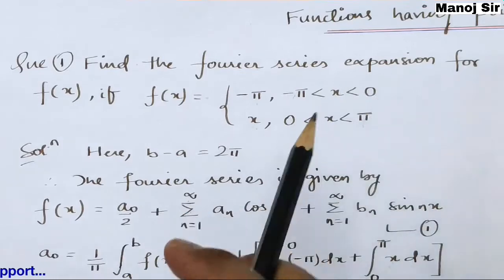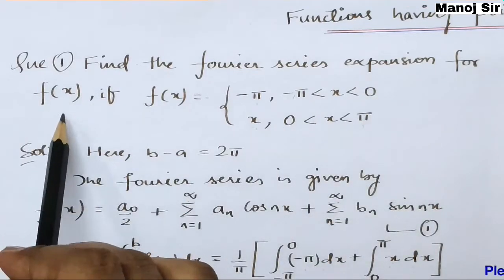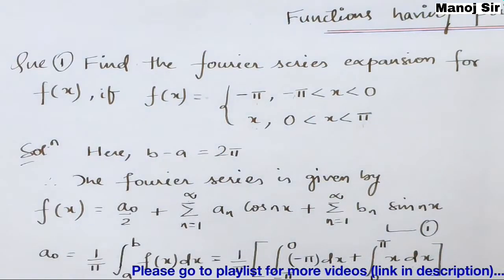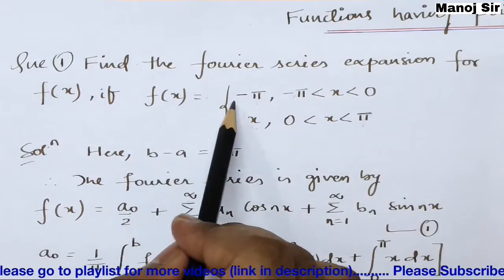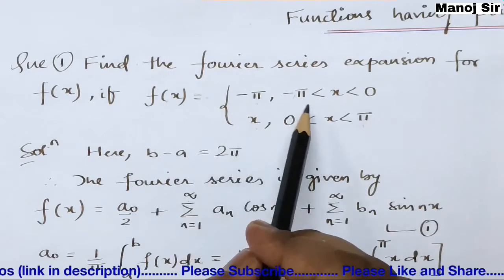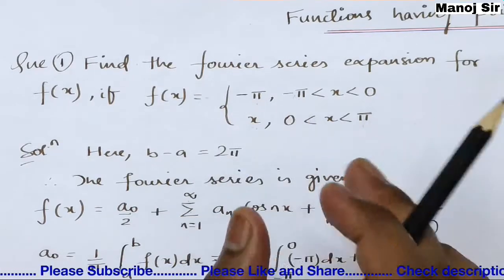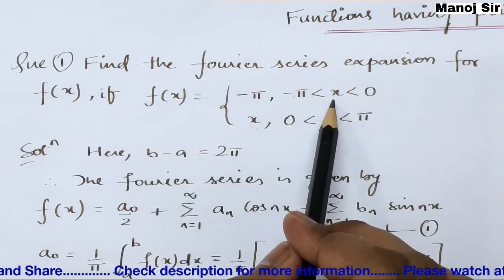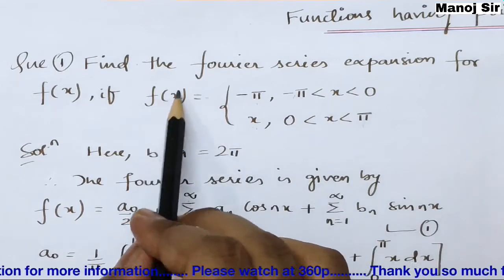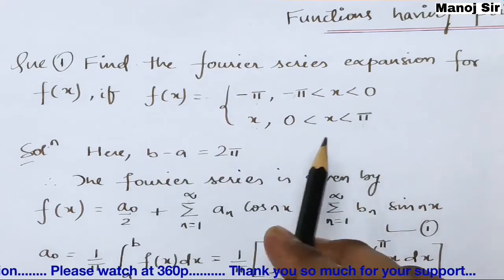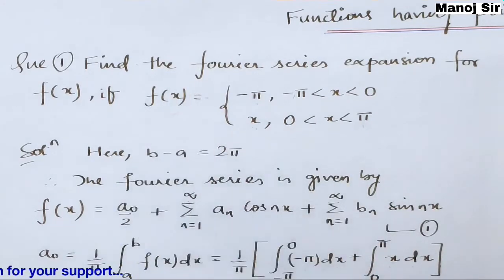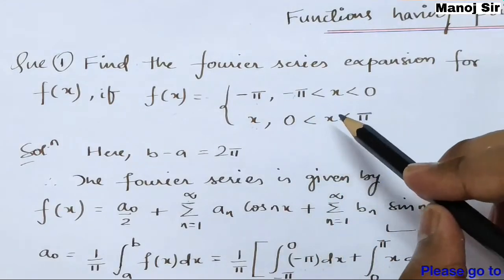We need to expand this function f(x) in Fourier series. Here f(x) = -π when x ranges from -π to 0, and the function becomes x when x ranges from 0 to π. Here we have points of discontinuity.